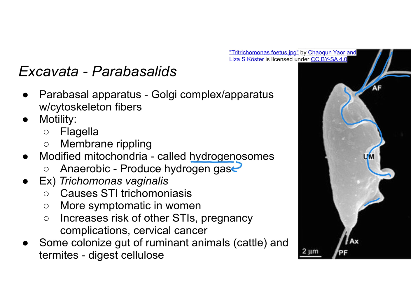Some forms of parabasalids are actually beneficial — they colonize the gut of ruminant animals like cattle and termites, and help to digest cellulose, which is more commonly referred to as fiber.